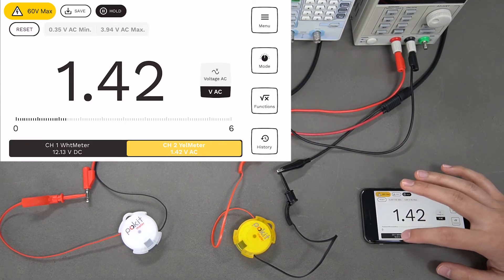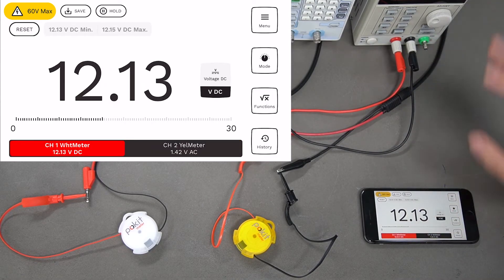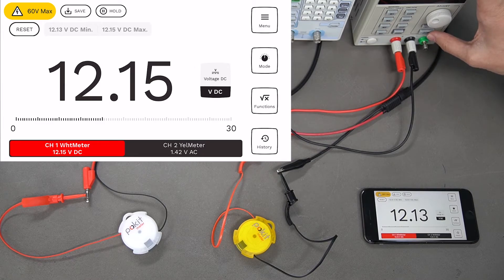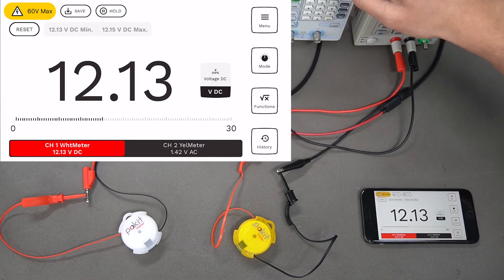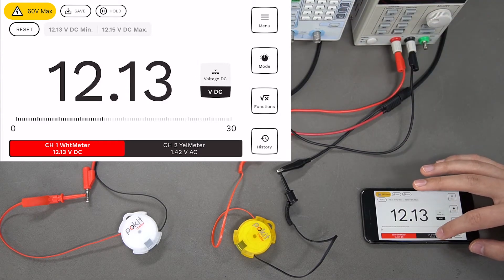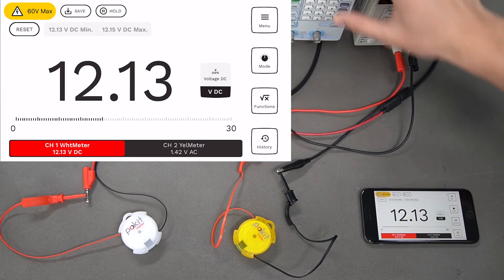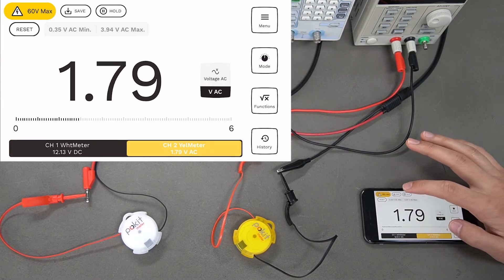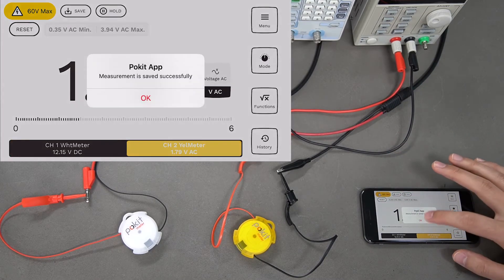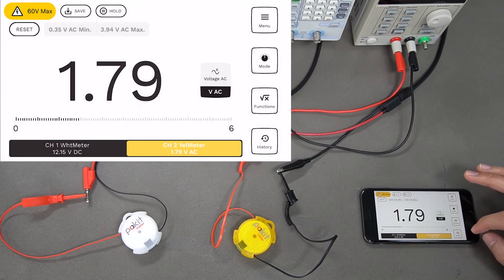Let's reset these values here again. Moving them up, moving them down, and we can hold this as well. Even if we go back into our first channel here, you can see that the yellow pocket meter is being held at the bottom, and even if we move it, it's been held until we release it.